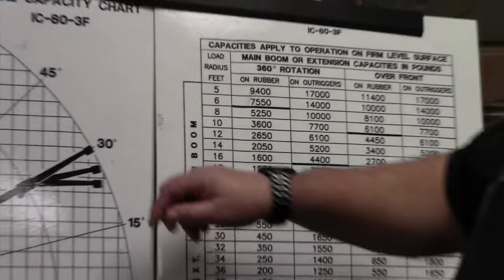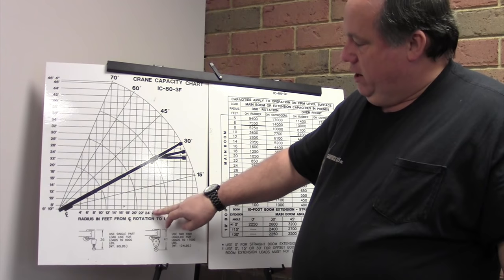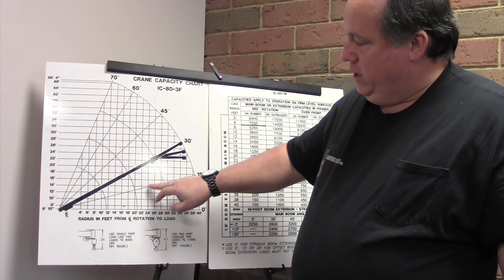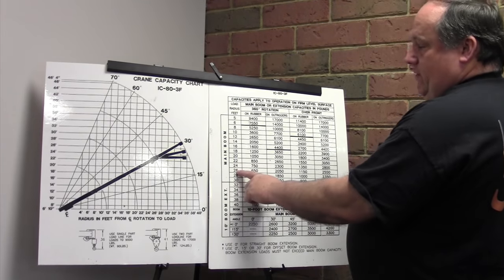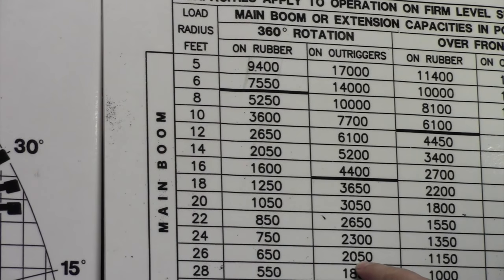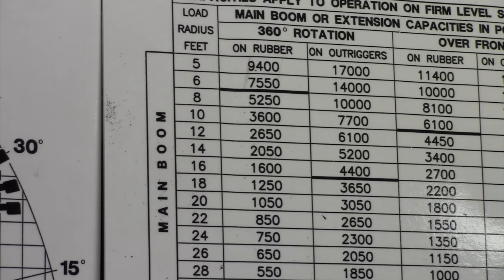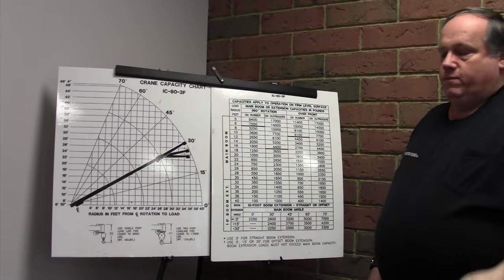In the example with the boom extended all the way out at 30 degrees, you find a 26-foot radius — that is, 26 feet from the hook to the center of the turret. Going to the chart at 26 feet: if the crane is on rubber, capacity is 650 pounds; on outriggers at 26 feet, capacity is 2,050 pounds. This is a 17,000-pound maximum capacity crane, and you can see that as you move away from the center line, capacity drops very, very quickly.